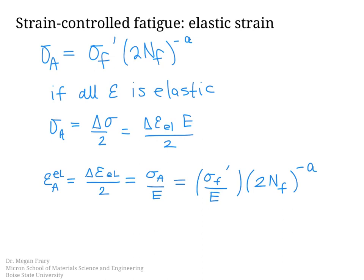This gives us a relationship that predicts the number of cycles to failure based on the elastic strain amplitude. We've divided through by the Young's modulus, so the pre-factor becomes the fatigue strength coefficient divided by Young's modulus. The equation still uses the same number of reversals to failure and the same fatigue strength exponent, relating strain to cycles to failure for the elastic, high cycle fatigue regime.